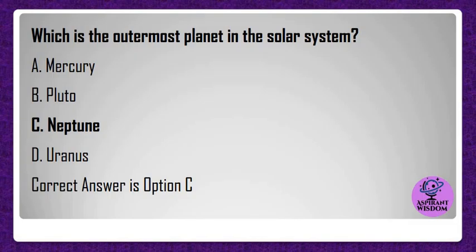Which is the outermost planet in the solar system? A) Mercury, B) Pluto, C) Neptune, D) Uranus. Correct answer is option C.